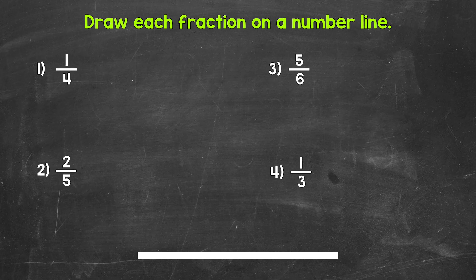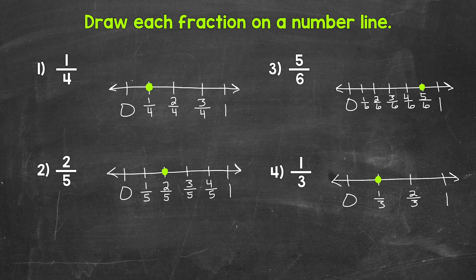Okay, so that's two minutes. Let's take a look at the answers. For number one, there should be four equal sections between zero and one, and the point should be over one from zero. For number two, there should be five equal sections, and the point should be two over from zero. For number three, there should be six equal sections, and the point should be five over from zero. For number four, there should be three equal sections, and the point should be over one from zero.